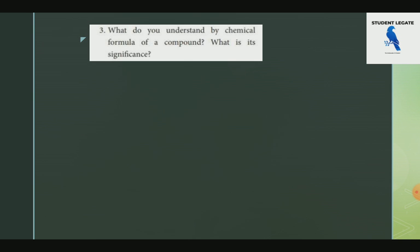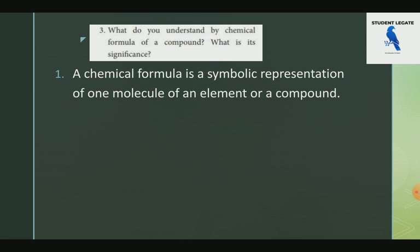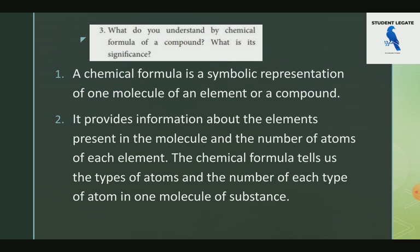What do you understand by the chemical formula of a compound? A chemical formula is a symbolic representation of a molecule of an element or a compound. It provides information about the elements present in the molecule and the number of atoms of each element.